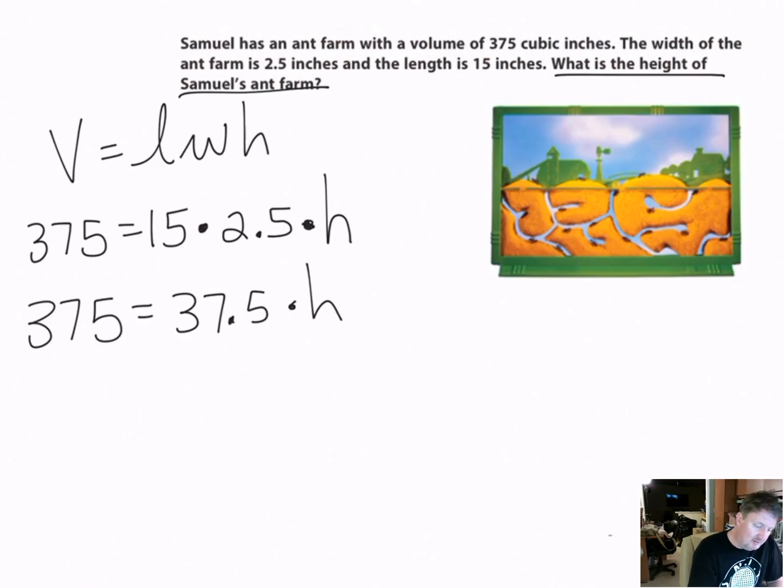But if you don't, we can still figure it out. Since I'm multiplying 37.5 times h, I have to undo that multiplication to find out what h is worth. I've got to get h by itself. Since I'm multiplying, I have to divide to undo that multiplication.